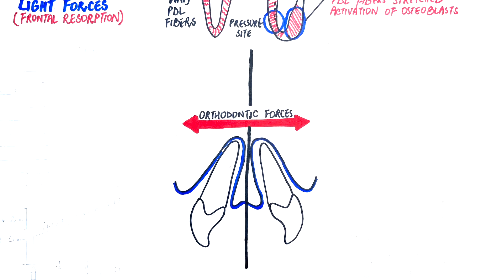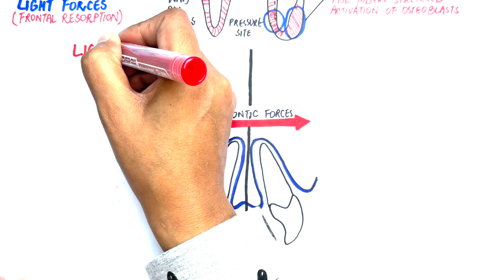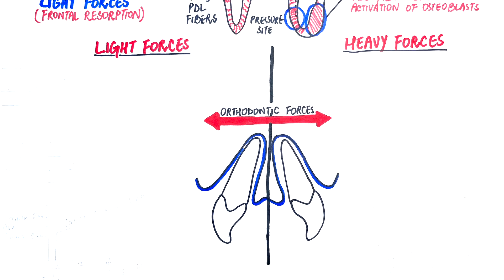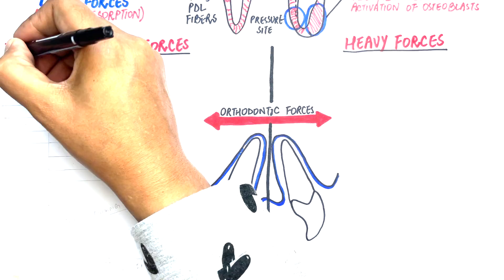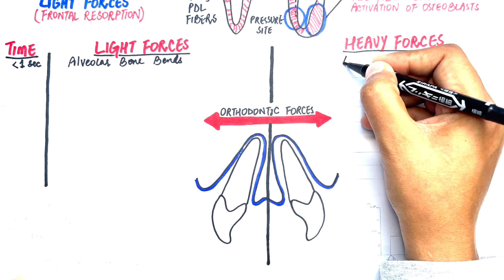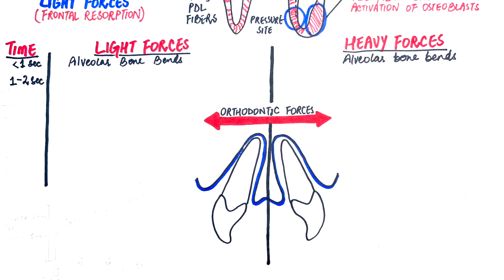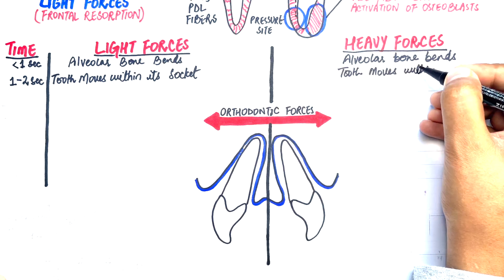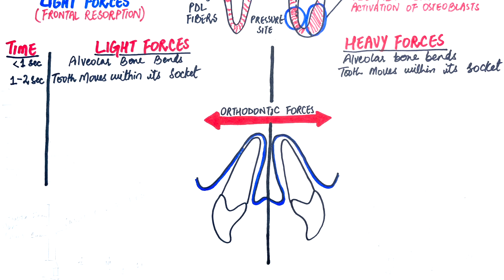Whether the orthodontic force is heavy or light, for the first two seconds the PDL of the tooth will react in the same manner for both kinds of forces. The alveolar bone bends for the initial one second of force application, and this occurs because of the generation of piezoelectric signals, as we discussed in our previous video. If the force application continues for one to two seconds, the tooth moves with its entire attachment apparatus. The course of events after the first two seconds is different for heavy and light forces.